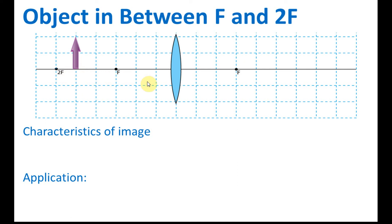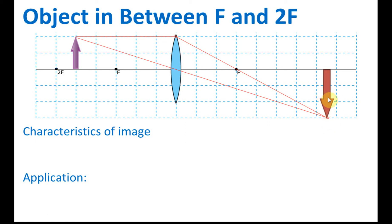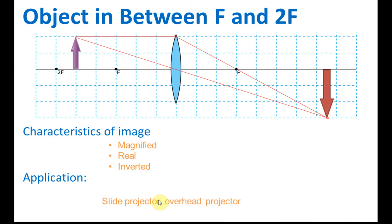What about putting the object between F and 2F? Drawing the ray diagram, one ray passes through F and another through O without being refracted, and they focus at a point on the other side. The image is bigger than the object — magnified. Since it is on the other side of the lens, it is real. It is also upside down — inverted. This is used in slide projectors and overhead projectors, where we want a bigger image on the screen.